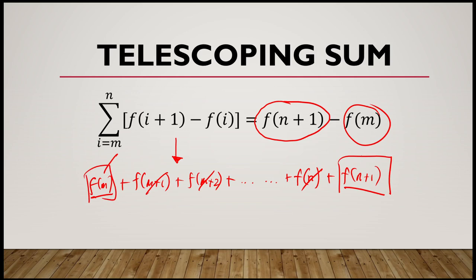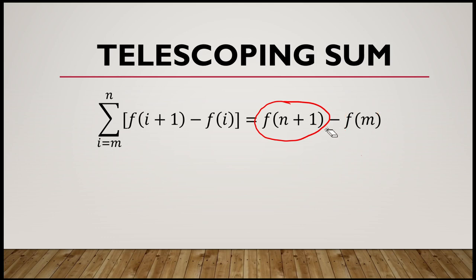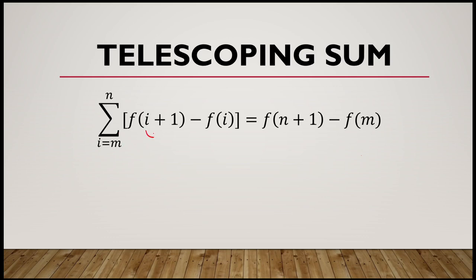That's where the name telescoping sum comes from. To apply this formula or theorem for telescoping sums, we need to write our series in sigma notation in that specific form. The summand must have consecutive terms — as you can see, f(i+1) and f(i) are consecutive.